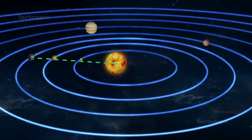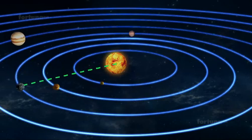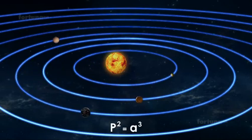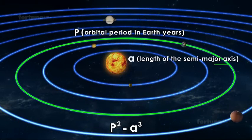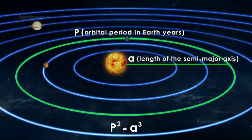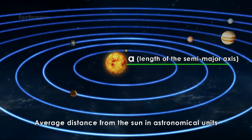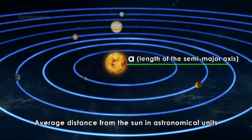Or vice versa. P² = a³, where P is the orbital period in Earth years and a is the length of the semi-major axis, which is the average distance from the sun in astronomical units.